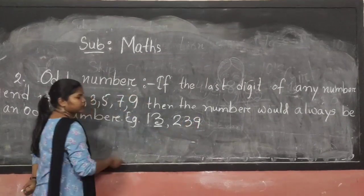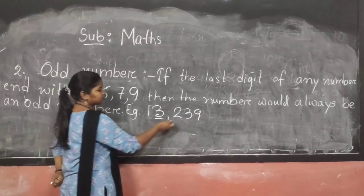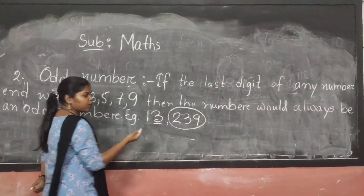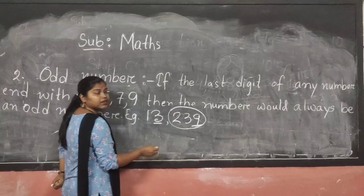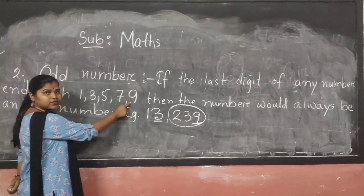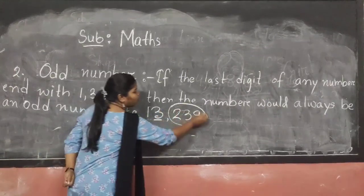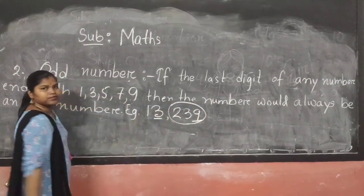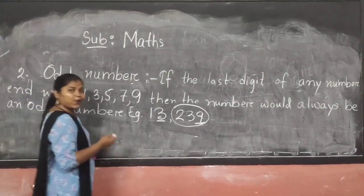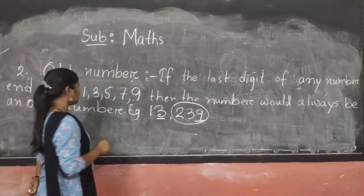Another example: 239. What number is this? This is an event number. But how? You see the last visit number — the last visit number is 9. So, 9 is an odd number. So, this whole number is an odd number. I hope you understood now what is an event number and odd number.